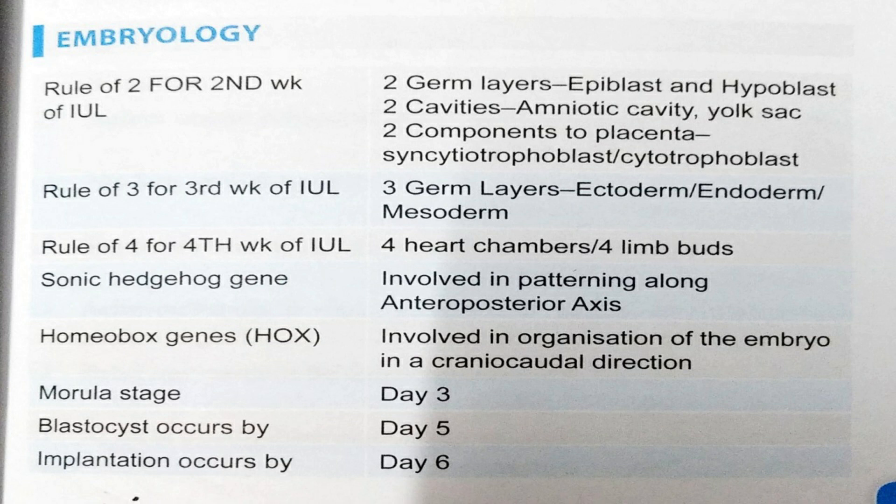Rule of two for the second week of intrauterine life: two germ layers — epiblast and hypoblast; two cavities — amniotic cavity and yolk sac; two components to the placenta — syncytiotrophoblast and cytotrophoblast.